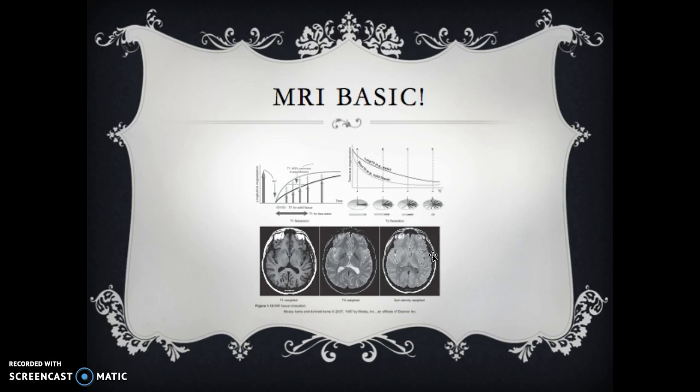If we're going T1, 400 to 800 TR, we're going to have dark fluid. If we're doing a T2, and we want the fluid really bright, we're going to go 4,000 to 8,000 TR. If we want something in between, we're going to compromise, and we're going to say it's going to be between 800 and 4,000.